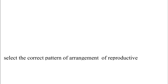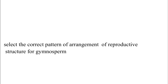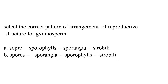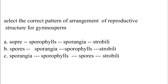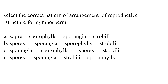Select the correct pattern of arrangement of reproductive structures for Gymnosperm. Option A: Spore, Sporophyll, Sporangia, Strobili. Option B: Spore, Sporangia, Sporophyll, Strobili. Option C: Sporangia, Sporophyll, Spore, Strobili.